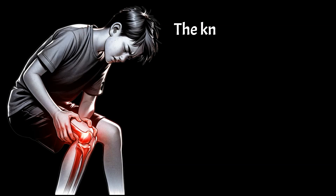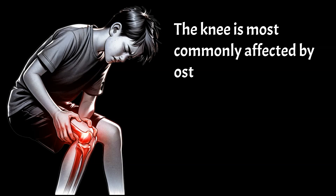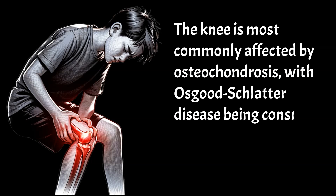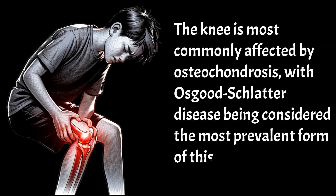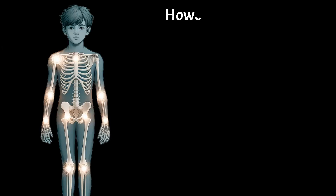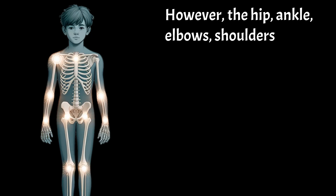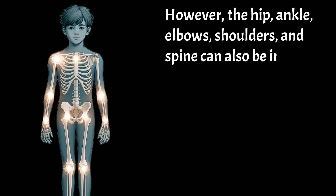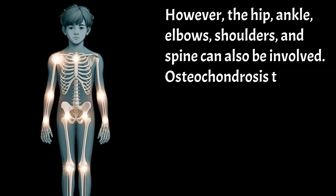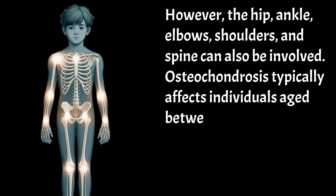The knee is most commonly affected by osteochondrosis, with Osgood-Schlatter disease being considered the most prevalent form of this condition. However, the hip, ankle, elbows, shoulders, and spine can also be involved. Osteochondrosis typically affects individuals aged between 8 to 15 years.